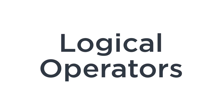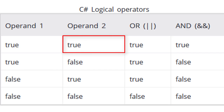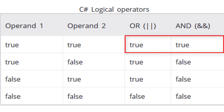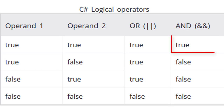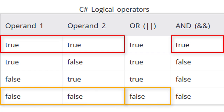Another type of operators are the logical operators, used to perform logical operations. The AND and OR logical operators work as follows: the OR operator returns false only when both values are false, while the AND operator returns true only when both values are true.